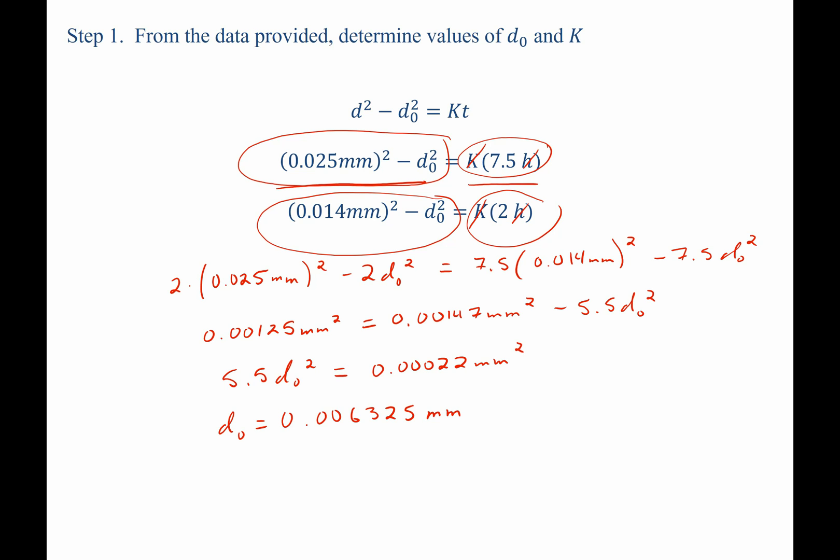Now that we know d-naught, we can simply plug back in and solve for K. We find that K is equal to 7.8 times 10 to the negative fifth, and it has the units of millimeters squared per hour.